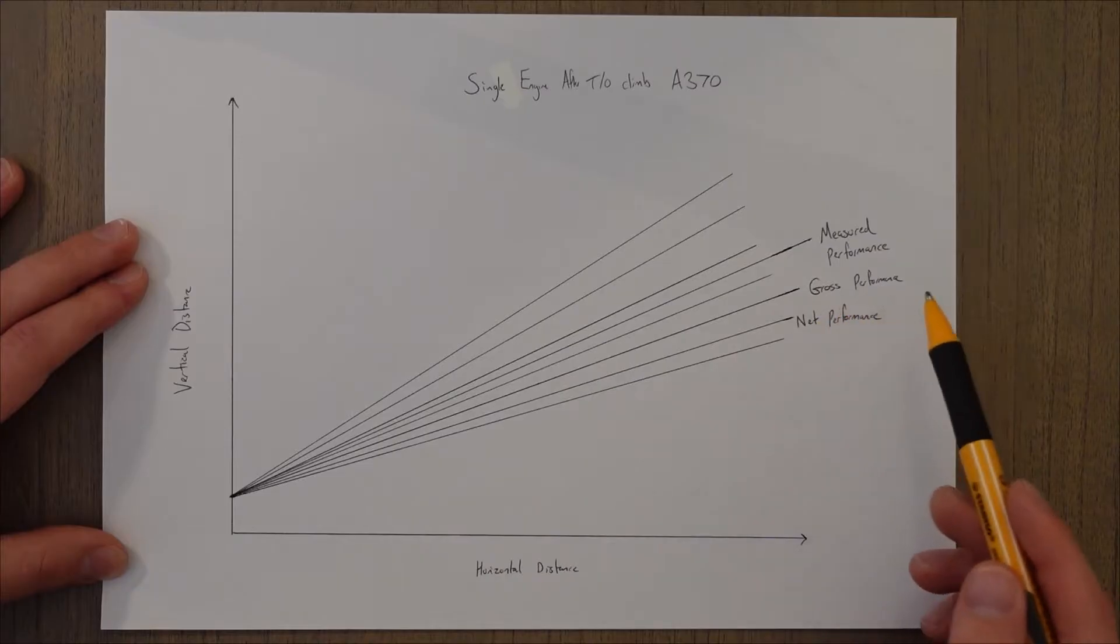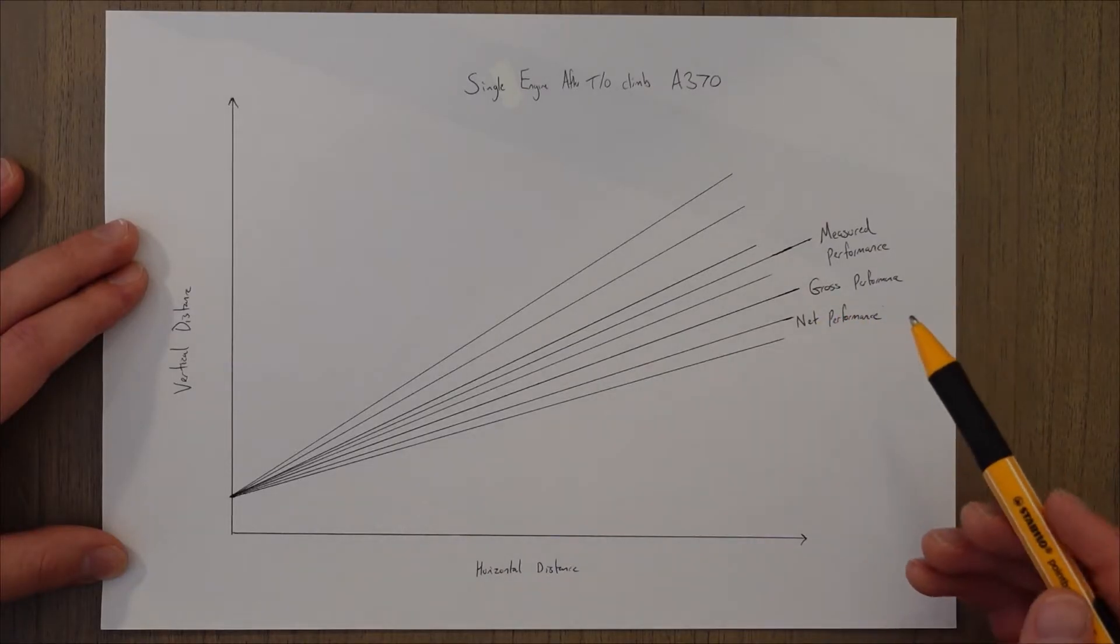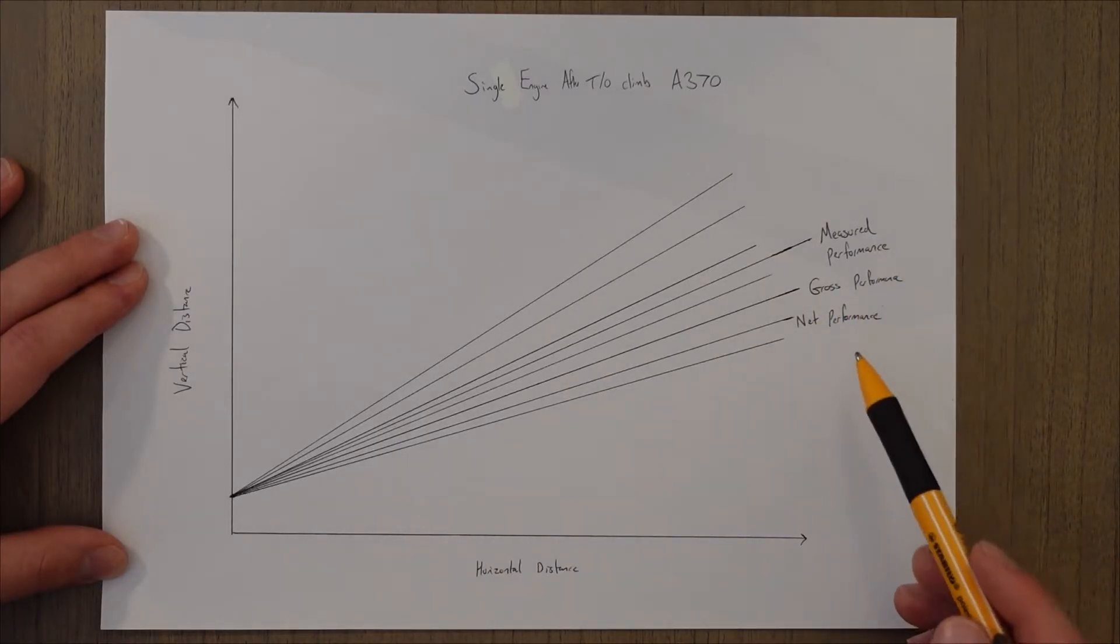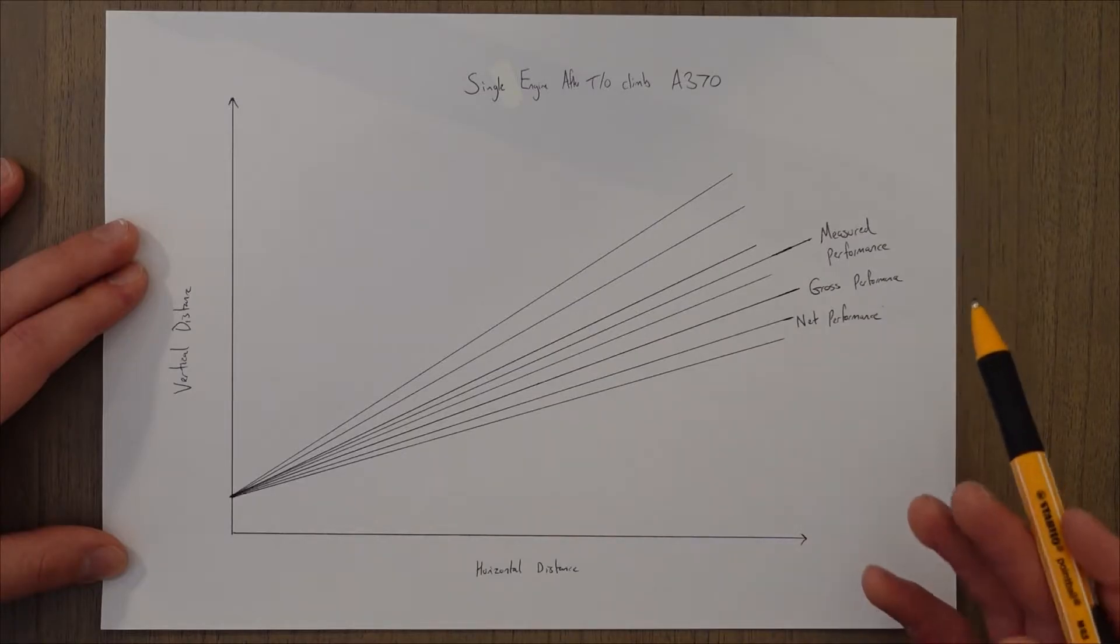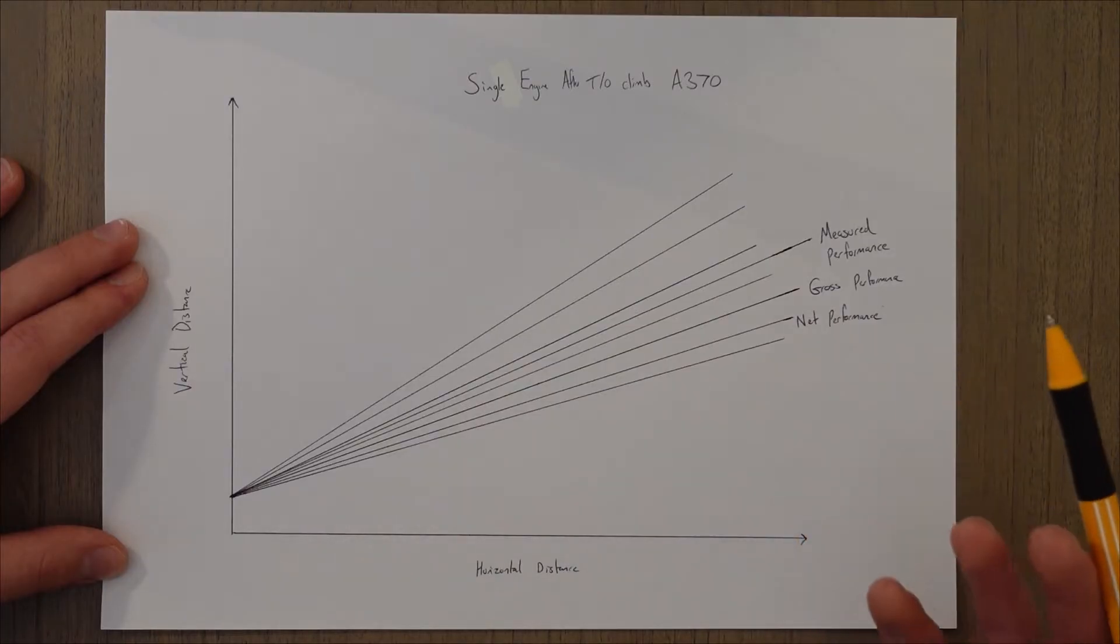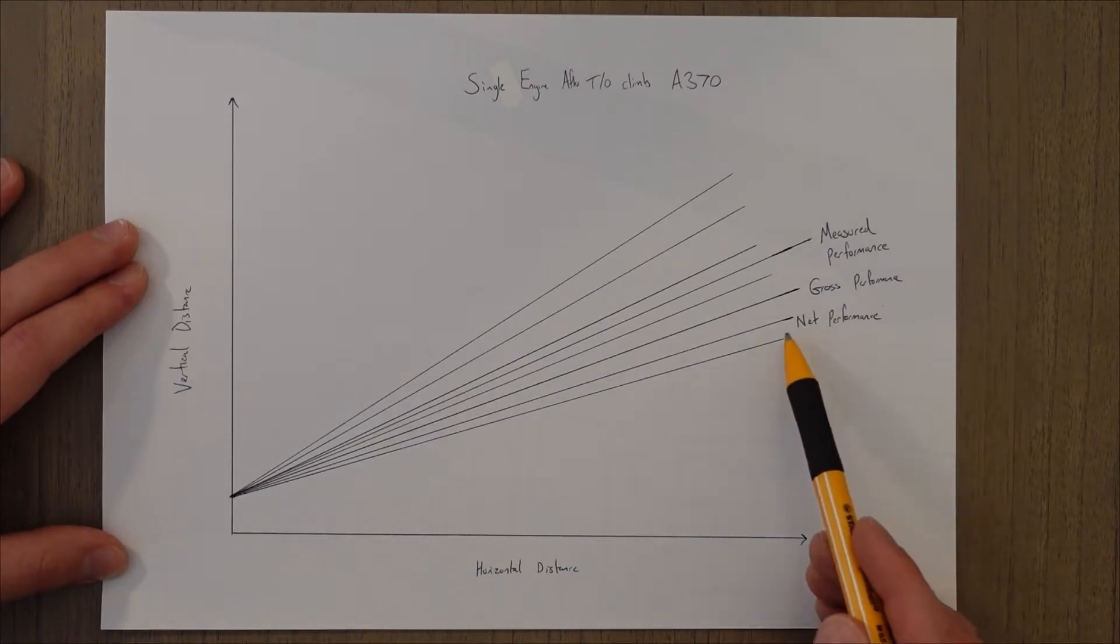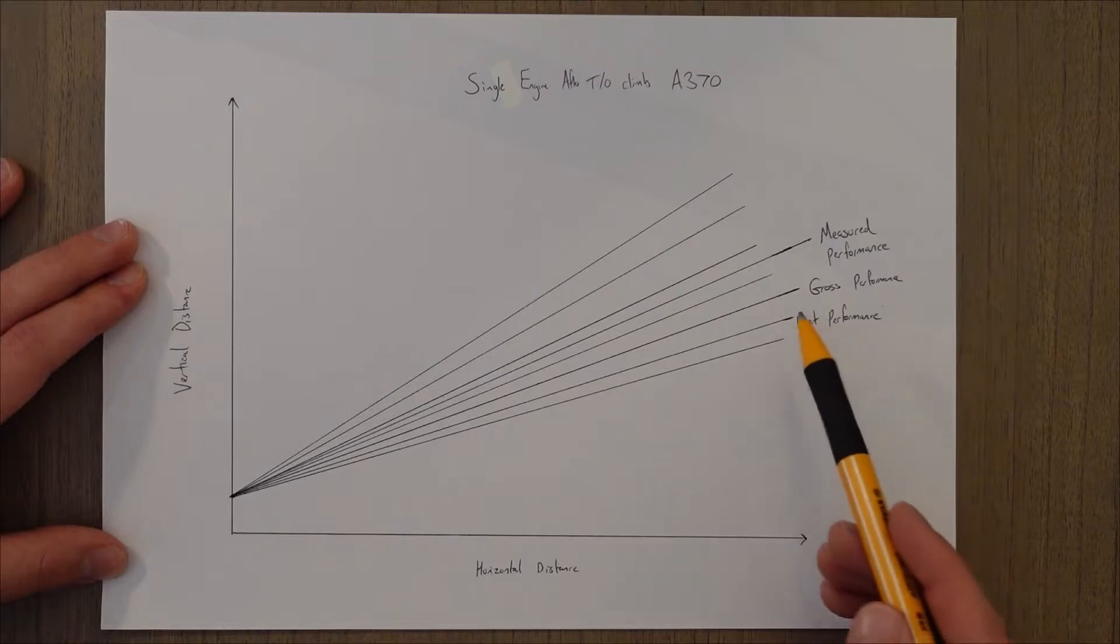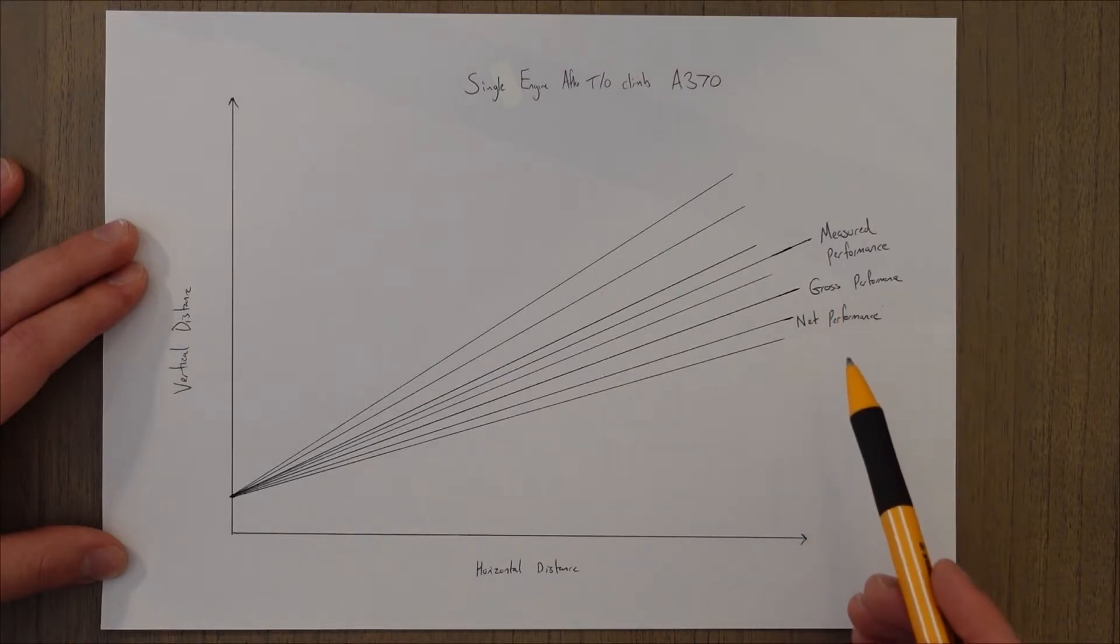So because gross performance is an average, we normally apply a safety factor to gross performance to account for some of these below average performances that we might expect. After this safety factor is applied, we get net performance, which will be slightly worse than the gross performance figures.